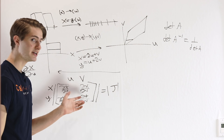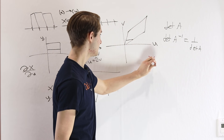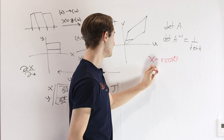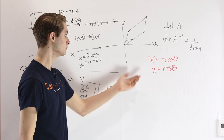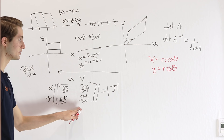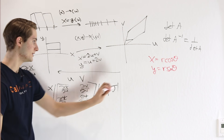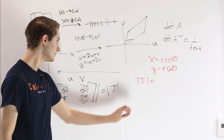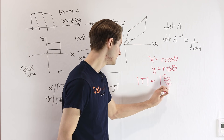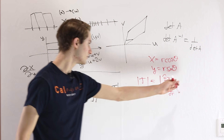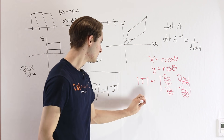Let's do one specific example of a Jacobian determinant. Let's say we want to find the Jacobian for the mapping x equals r cosine theta and y equals r sine theta — the mapping onto polar coordinates. We use the Jacobian determinant to figure out how much area is getting squished. The matrix is: dx/dr equals cosine theta, dy/dr equals sine theta, dx/dθ equals negative r sine theta, and dy/dθ equals r cosine theta.